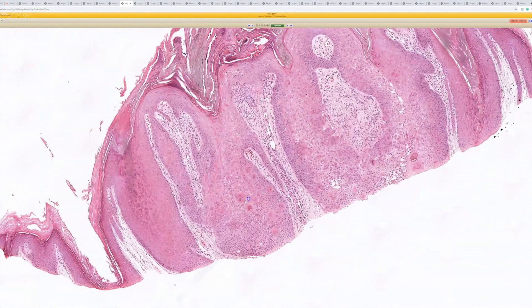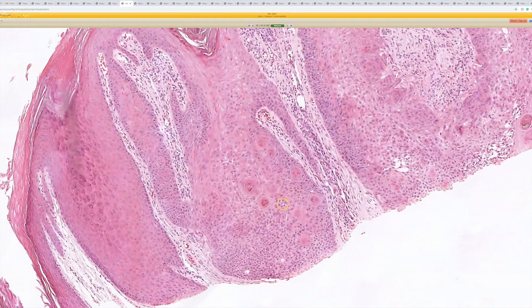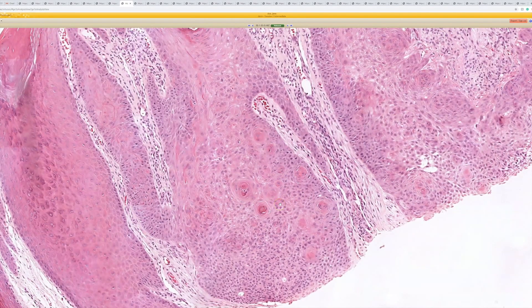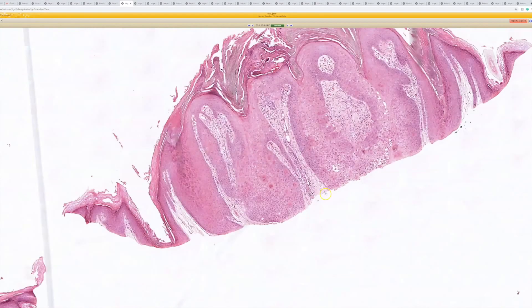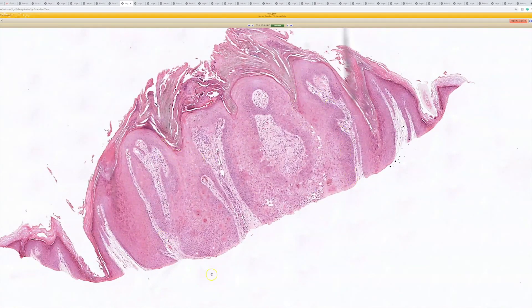This has got keratinocytes and squamous eddies, right? Just like an irritated seborrheic keratosis, but it kind of has this downward pushing borders that bulge down into the dermis.